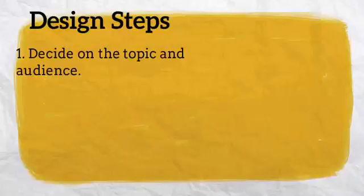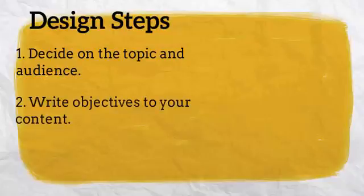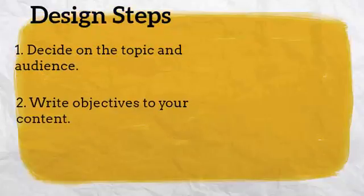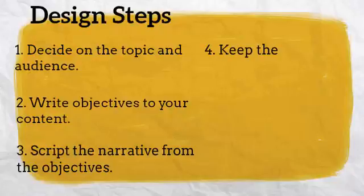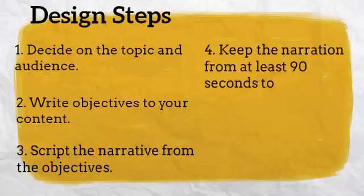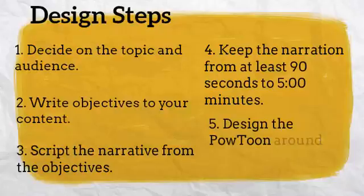1. Decide on the topic and audience. 2. Write objectives to your content. 3. Script the narrative from the objectives. 4. Keep the narration from at least 90 seconds to about 5 minutes. 5. Design the PowToon around your narration.